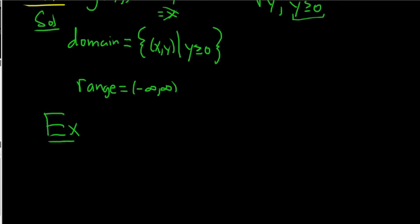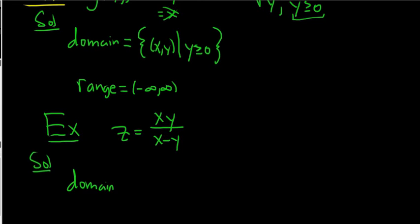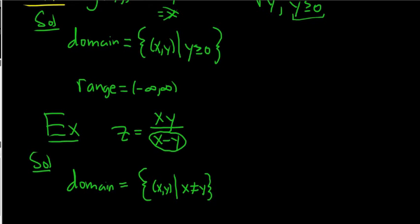How about z = xy / (x - y). Let's look at the domain first. The only possible issue is the denominator — this piece can't be 0. In other words, x can't be equal to y. So the domain is the set of all ordered pairs (x, y) such that x is not equal to y, where x and y are real numbers.